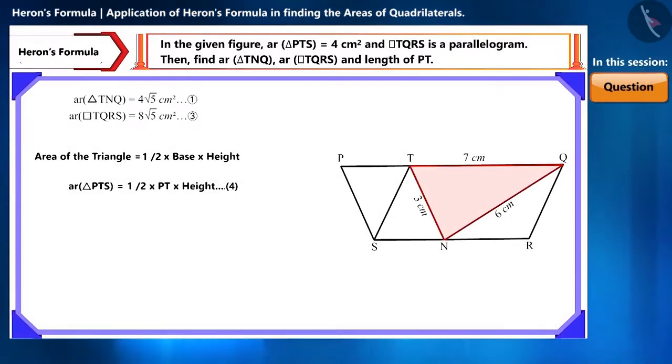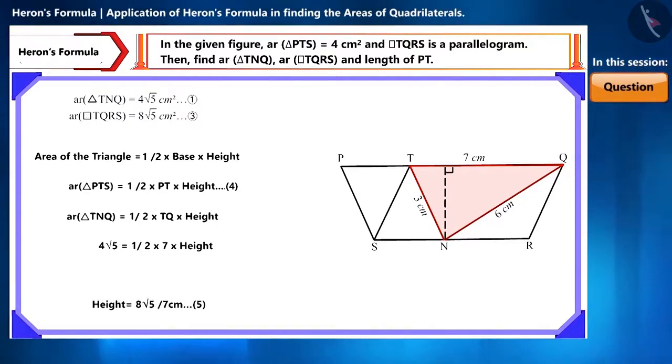We are given the base TQ of triangle TNQ is 7 cm, and we obtained its area as 4√5 cm². We can find the height of this triangle by substituting their values in this formula. We will obtain its height as 8√5/7 cm.